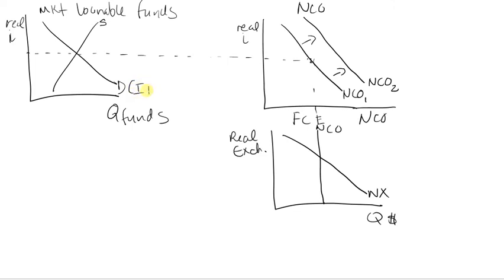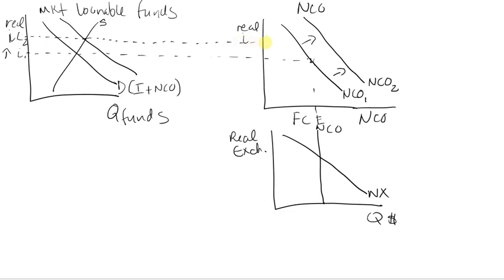These investments are going to be financed. We have I plus NCO, so this capital flight will require financing — we're going to demand funds in the market for loanable funds. That shifts the demand for loanable funds, which increases the real interest rate.